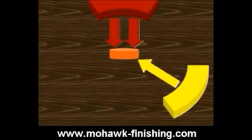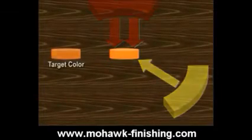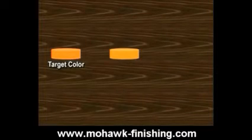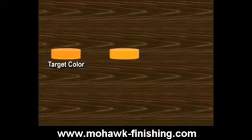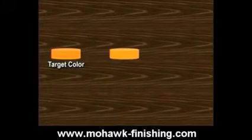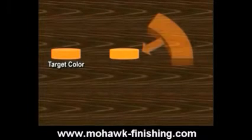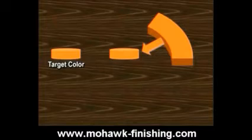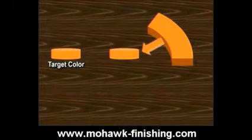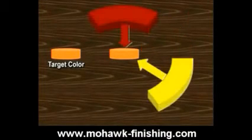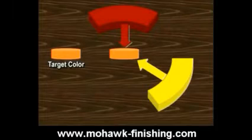Certainly, there are far too many possibilities to list. How does this help you match colors? Let's suppose you have tried to match a given color, but when you look at the target color, it appears to be more orange than what you've mixed. If you have it, you can add a touch of orange. If you don't have orange, based on color theory you know you can add red and yellow to make the match.